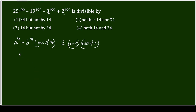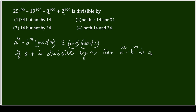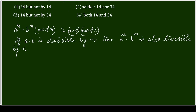What does it mean? If (a minus b) is divisible by n, then a^m minus b^m is also divisible by n. To check the divisibility for our options, note that 34 equals 2 times 17, and 14 equals 7 times 2. So we need to test divisibility by 2, by 7, and by 17.